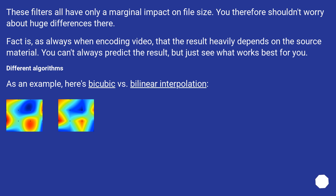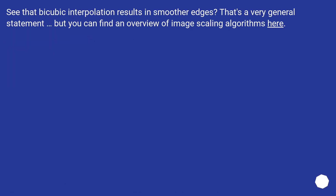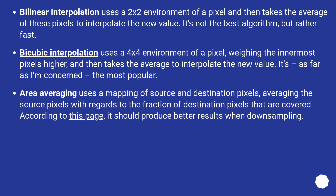As an example of different algorithms, here's bicubic versus bilinear interpolation. See that bicubic interpolation results in smoother edges? That's a very general statement, but you can find an overview of image scaling algorithms online. Bilinear interpolation uses a 2x2 environment of a pixel and then takes the average of these pixels to interpolate the new value. It's not the best algorithm, but rather fast.